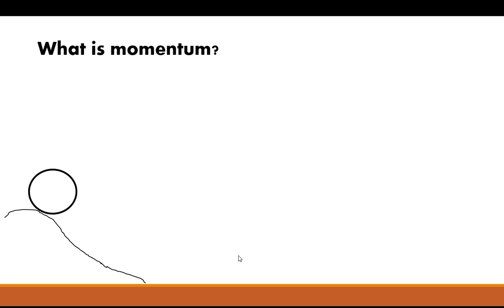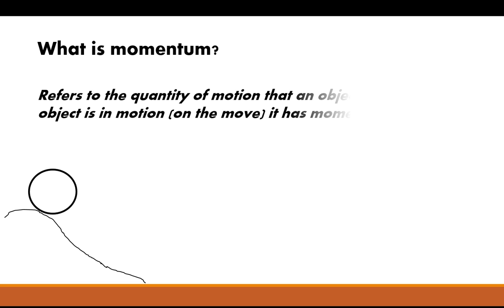So we'll start off with momentum. What exactly is momentum? We can look up a definition of it. Momentum refers to the quantity of motion that an object has. If an object is in motion, in other words it's on the move, then it has momentum.